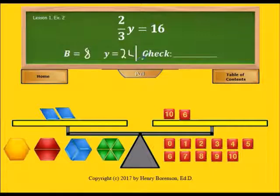In order to do the check, we go back to the original physical setup. Two-thirds of y equals 16. If each blue block is 8, on this side I have 8 and 8, or a total of 16.